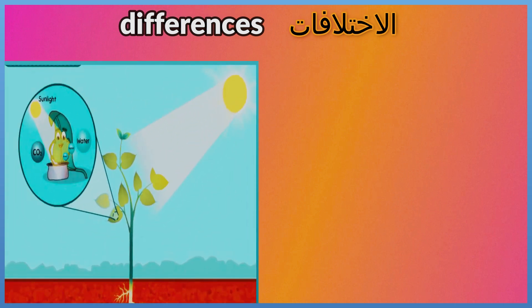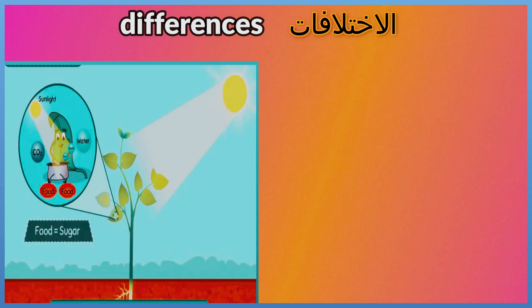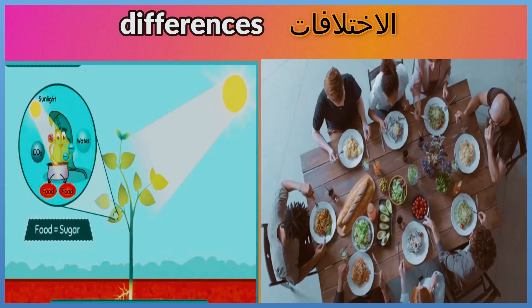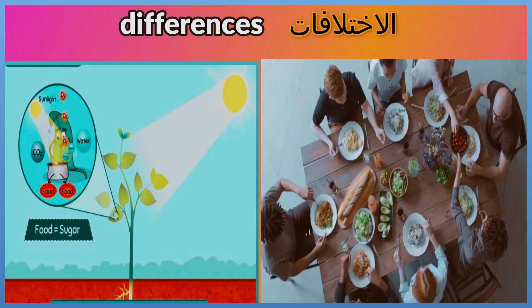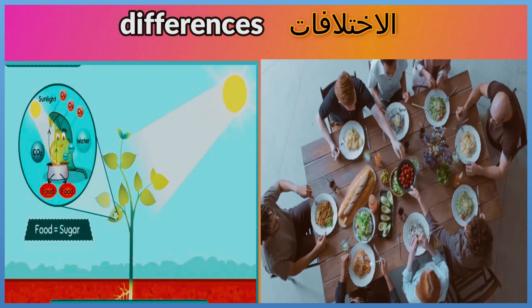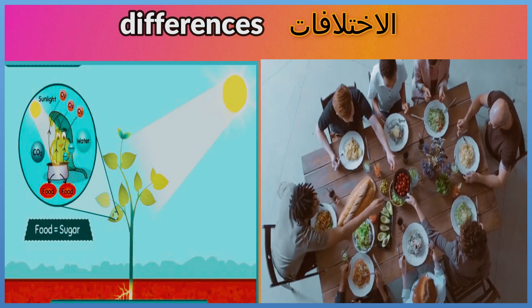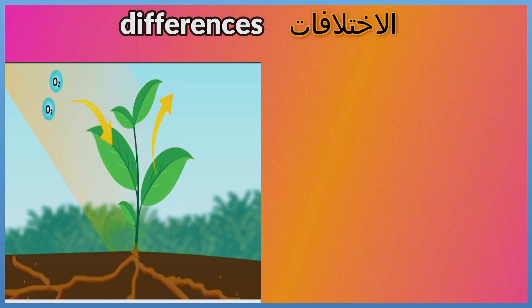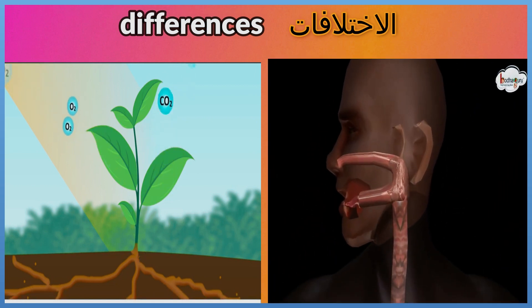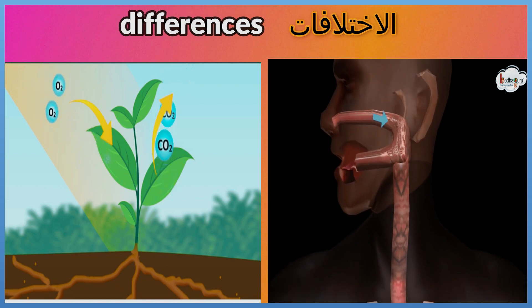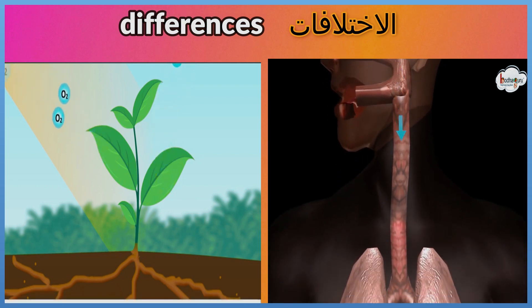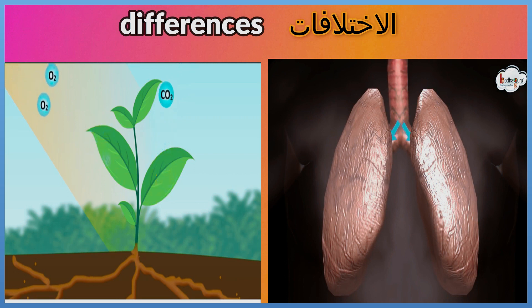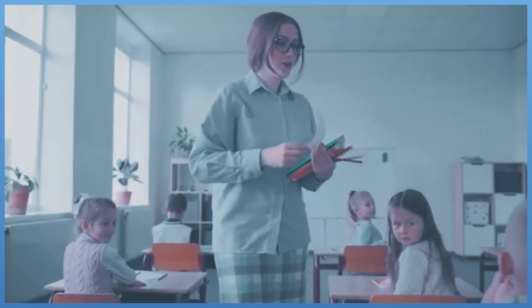Plants can manufacture their own energy in the form of glucose through the photosynthesis process. Humans must eat food throughout the day to get energy; as they chew and swallow the food, nutrients are absorbed into the blood. Gases enter plants through the leaves. Air enters the human body through the nose and mouth, then travels to the lungs, where oxygen is absorbed into circulating blood.